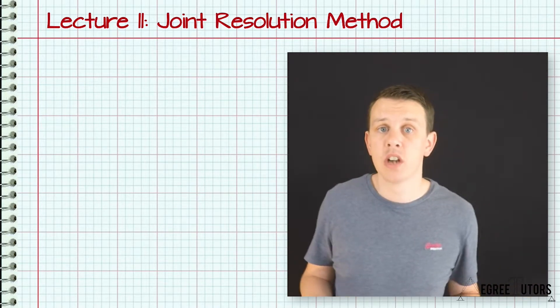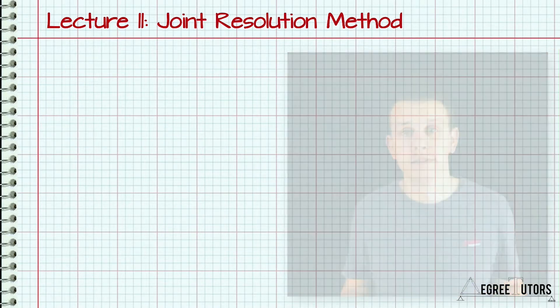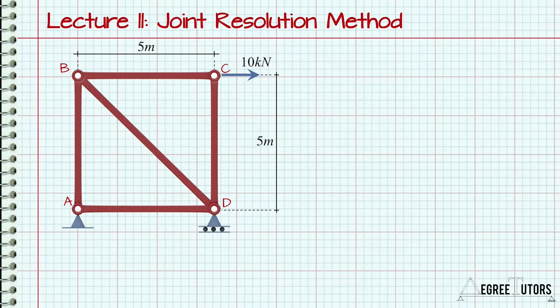The first method we'll consider is called the joint resolution method. The best way to learn this is to jump straight into an example. Consider this simple pin jointed structure subject to the horizontal 10kN load at joint C. The first step when analyzing any pin jointed structure is to determine the reaction forces.